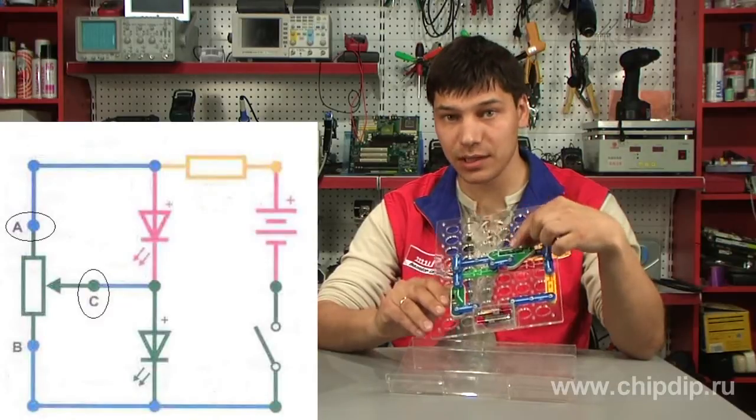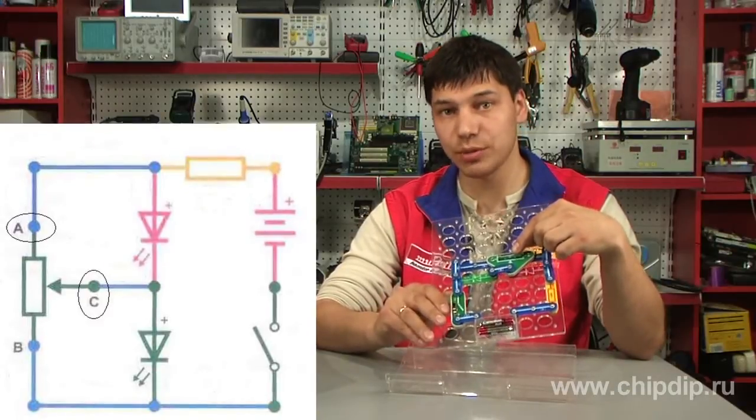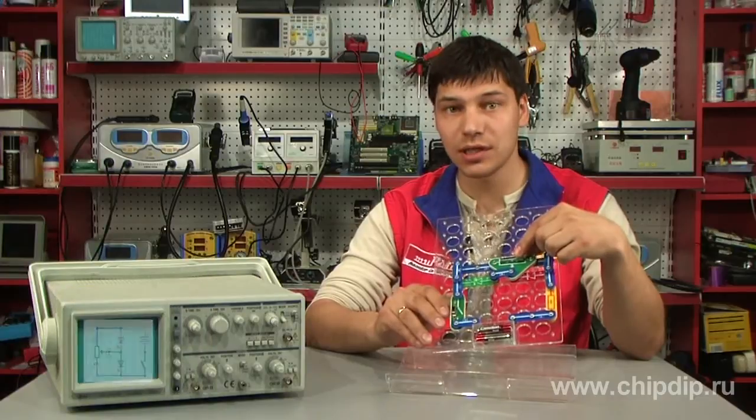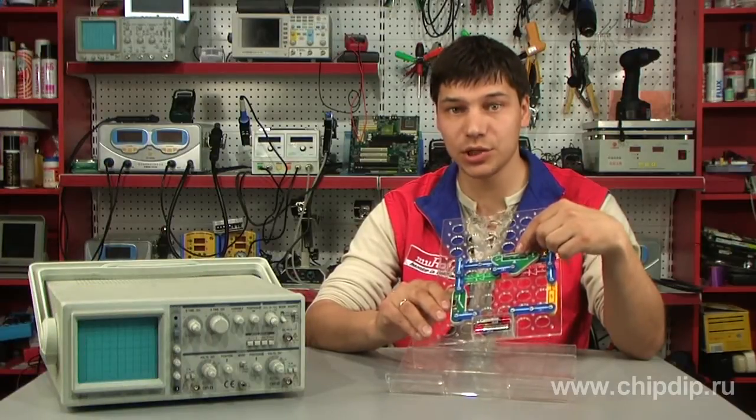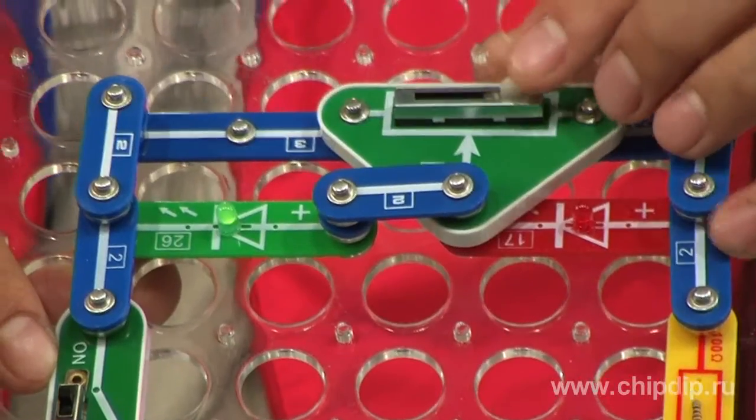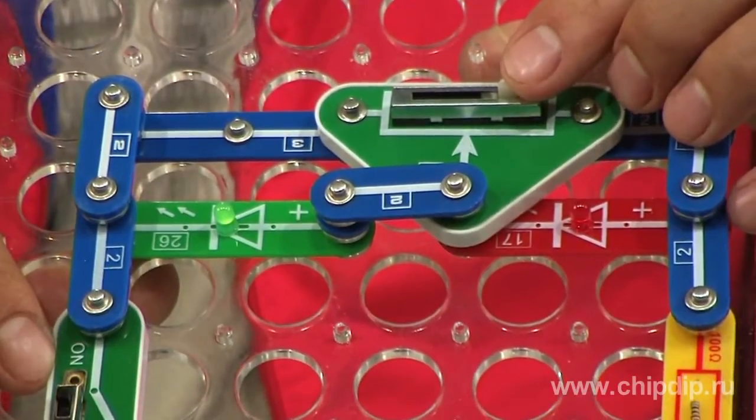In the extreme high position of the sliding contact, the resistance between points A and C amounts to zero. The red LED is practically shut off the circuit and all the current flows through the green LED.